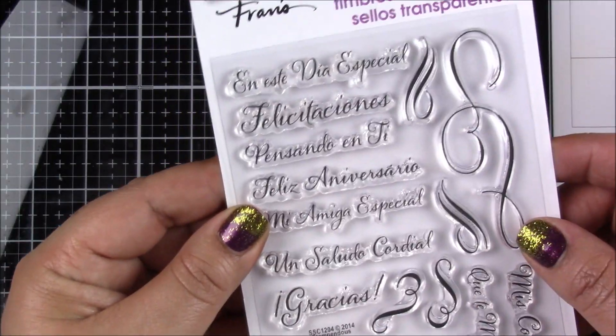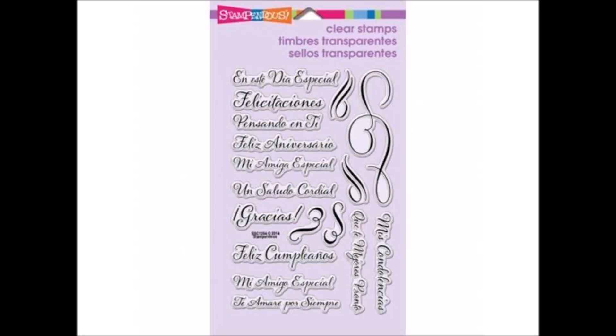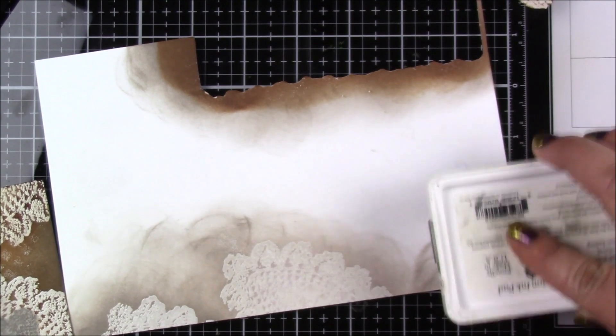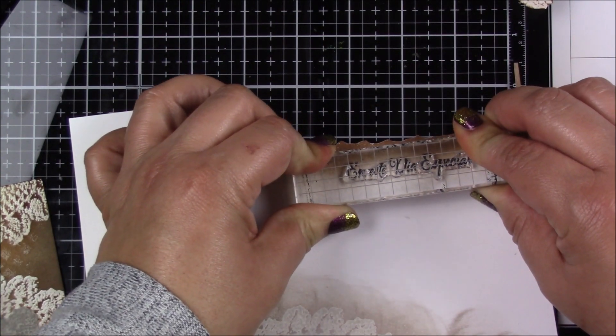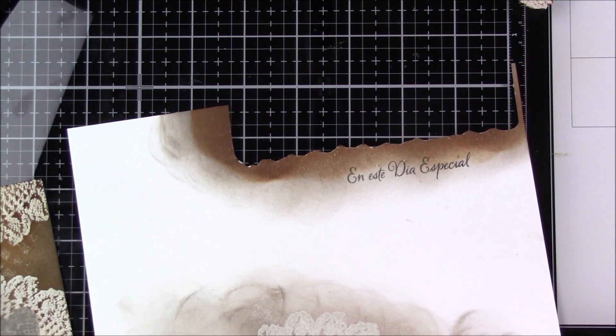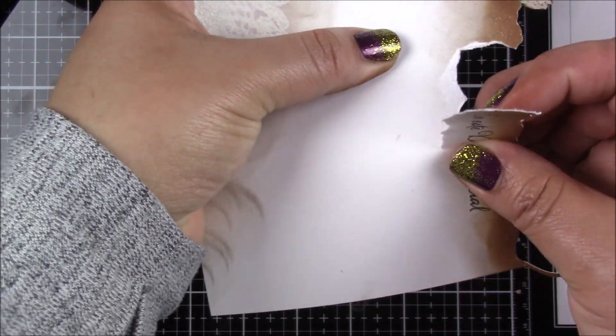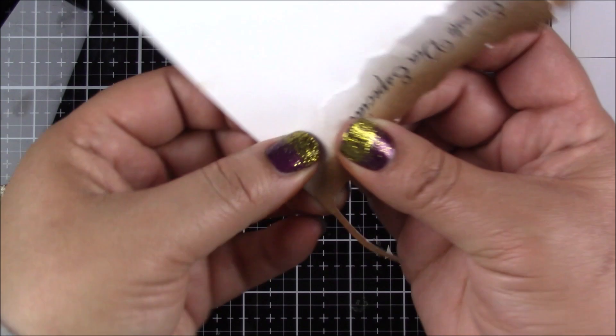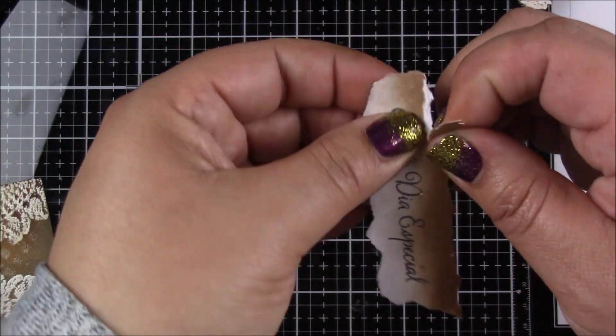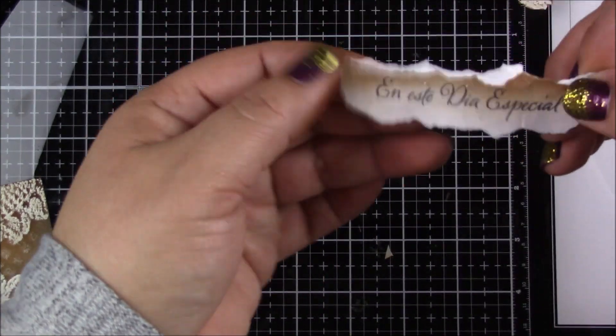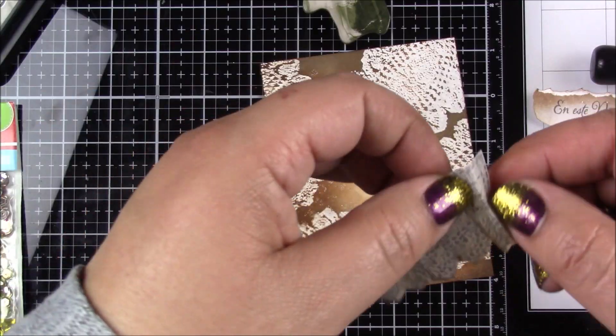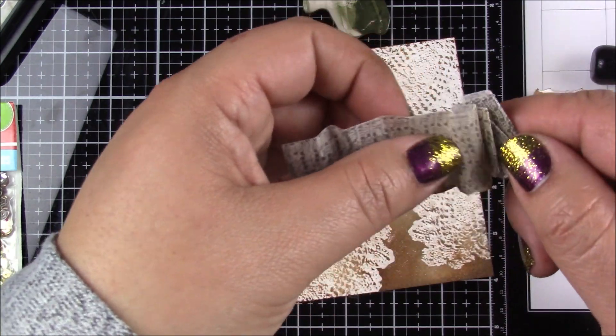Next it's time to work on the sentiment. I wanted to do it in Spanish, and this one is by Stampendous—it's called Loving Messages in Spanish. I'm using the one that says "En este dia especial," which means "on this special day." I'm stamping with black licorice ink once again, and like I told you before, I'm using the same area that I inked previously for the other embellishment.